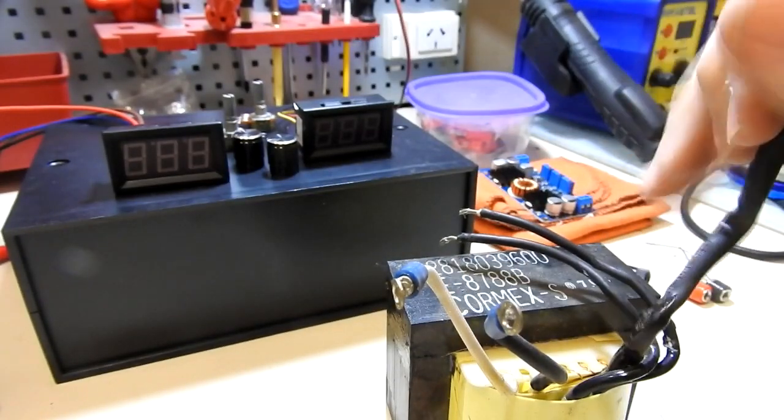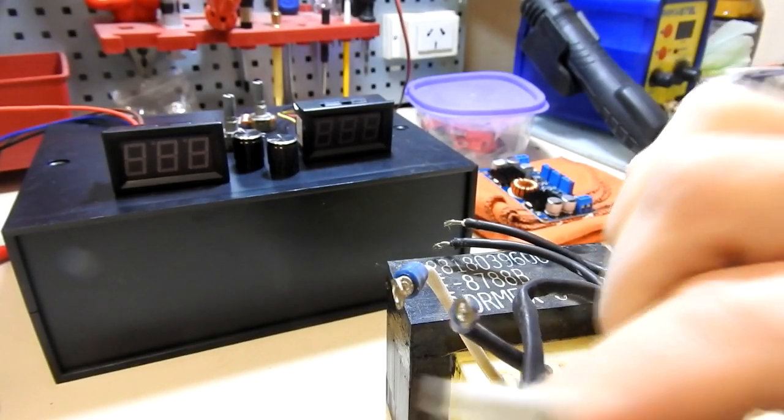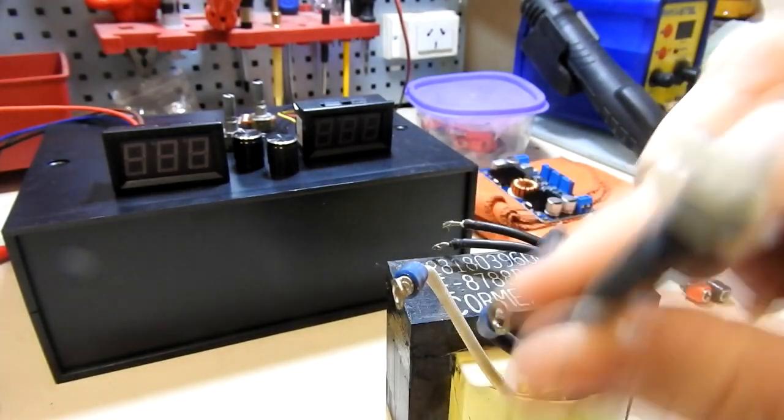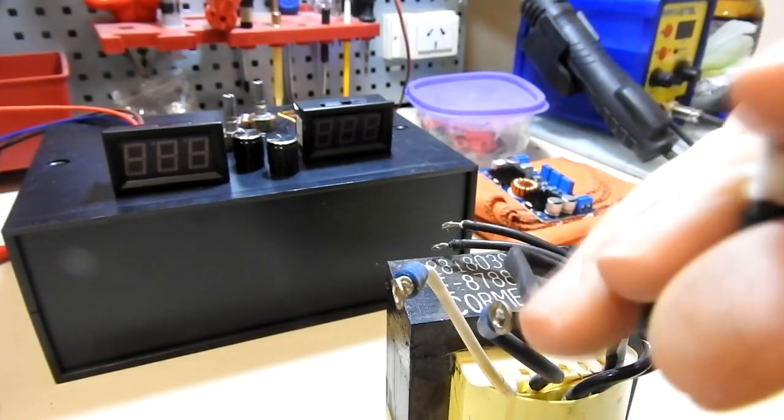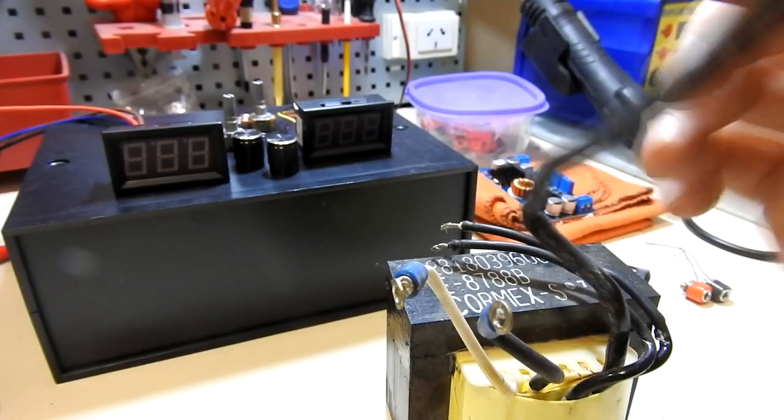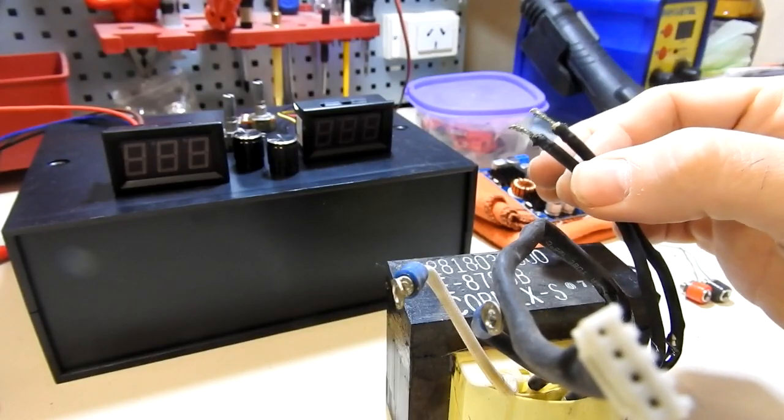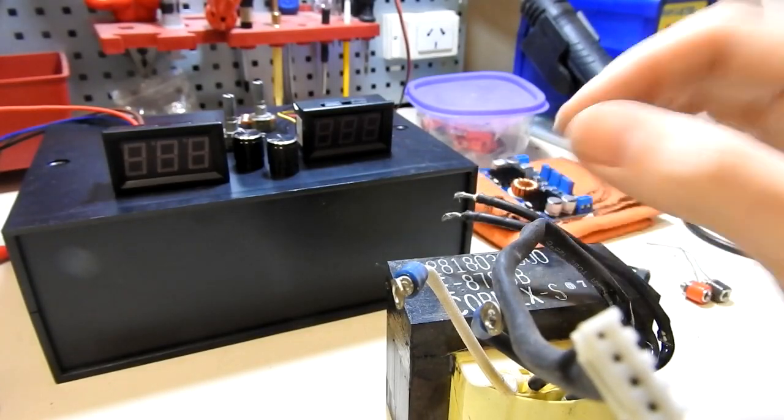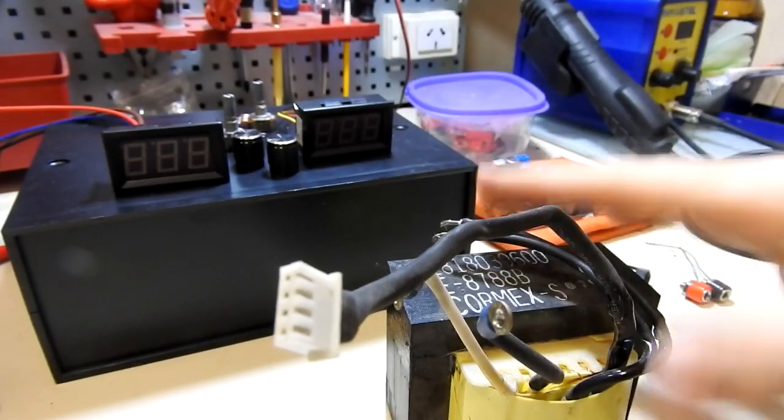Después este transformador tiene otras salidas que probablemente sean de menor o mayor voltaje. La verdad que no sé, tienen unos cables finitos, así que tendría que cortar y medir. Por ahora no he hecho ninguna medición acá. Lo único que he medido es esta bobina para asegurarme que estuviera bien. Y ya lo he testeado y esto funciona.